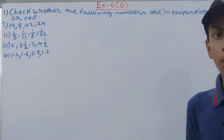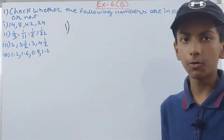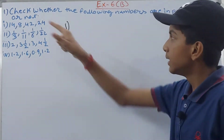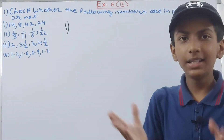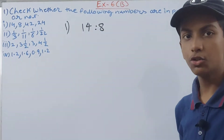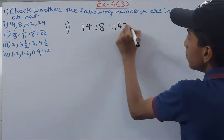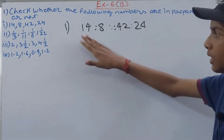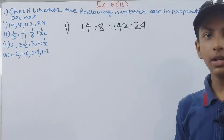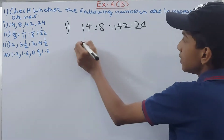Let's move on to solving the questions. The first part gives us the numbers 14, 8, 42, and 24. We write them in proportional form: the first two numbers form the first ratio and the second two form the second ratio. So we write 14 is to 8, proportion sign, then 42 is to 24. We have to check if they are actually in proportion.